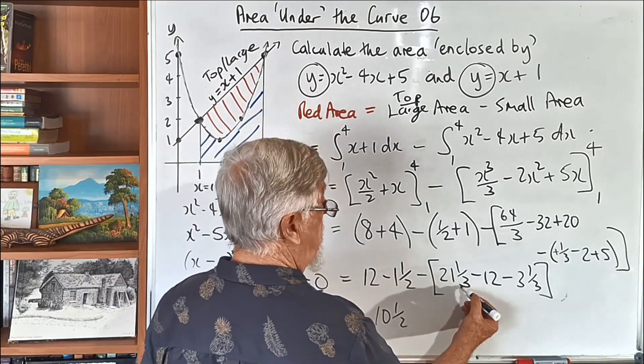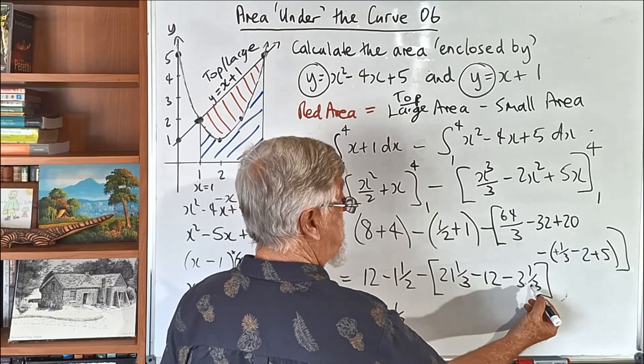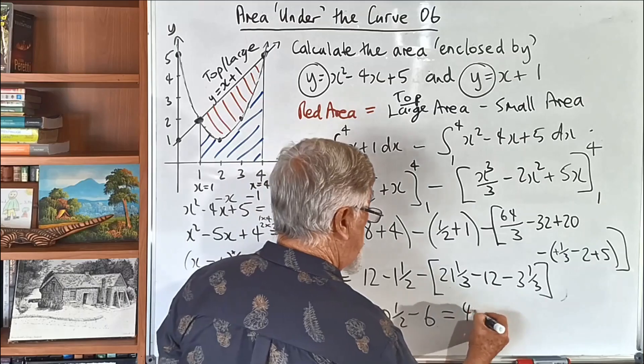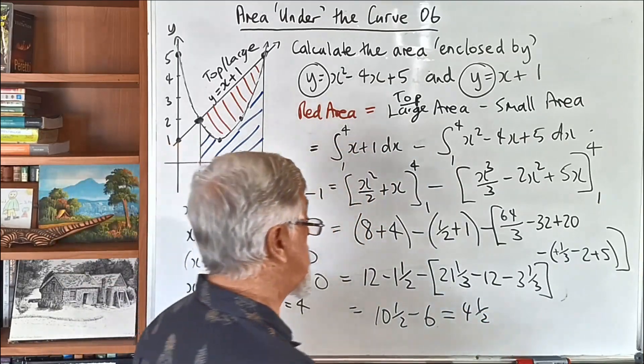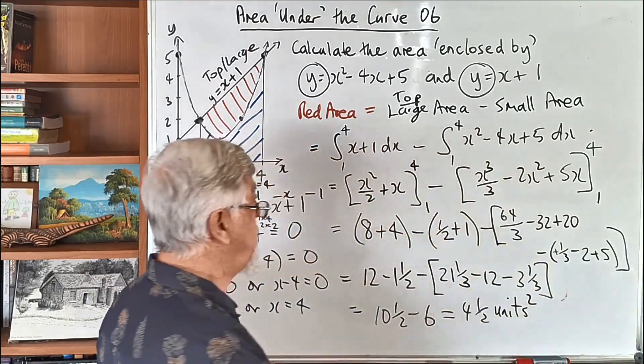Oh, it's pretty easy if you go 21 and a third take 3 and a third. 21 and a third take 3 and a third is 18, take 12 and 6. So, that's just 10 and a half take 6, which is 4 and a half. So, with all that mucking around, we end up with a nice, simple area of 4 and a half unit squared. Don't forget to put in the unit squared.